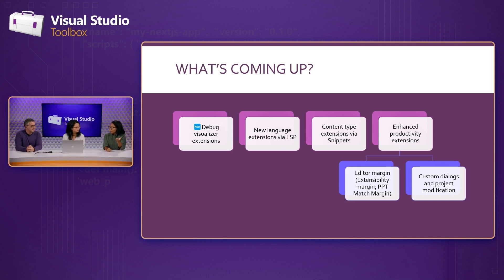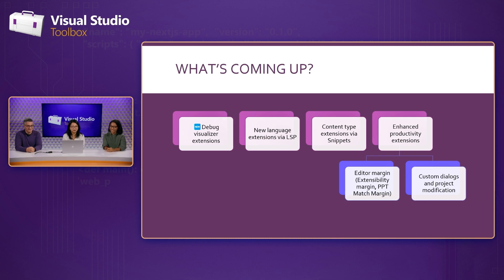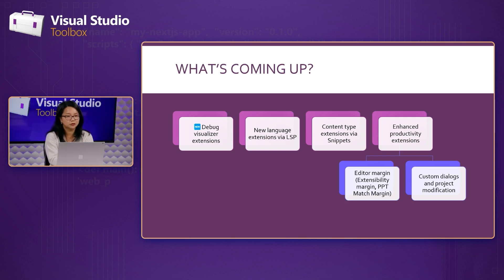Debugging visualizers are exclusive to this new model. That includes stuff like making your own version of the IEnumerable visualizer and managed types. If you haven't seen the IEnumerable visualizer, you should definitely check it out — it's awesome. We'll also have project query support coming, which is really exciting because project is really essential to Visual Studio. So that's coming along for Visual Studio extensibility too, and that's in the near future.